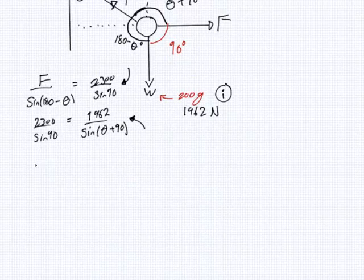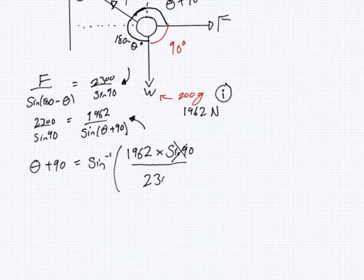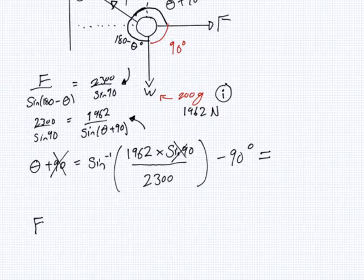If we type in theta plus 90 will equal sine inverse 1962 multiply sine 90, which is just one, over 2300. So theta will be that minus 90, if somebody can tell me that, please. And then F is, what is it?